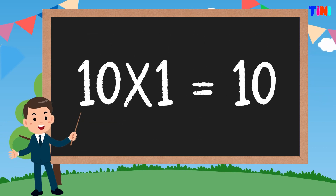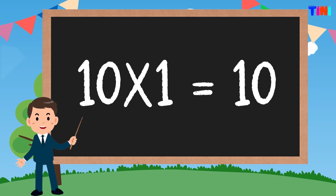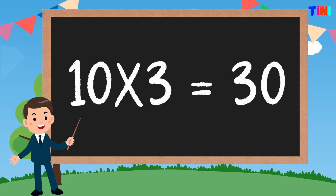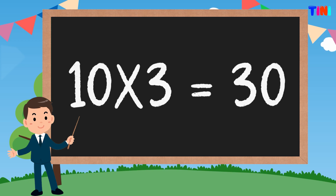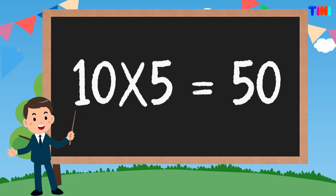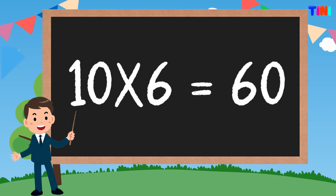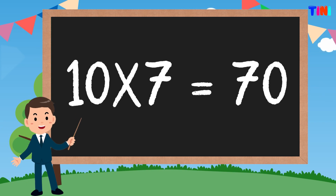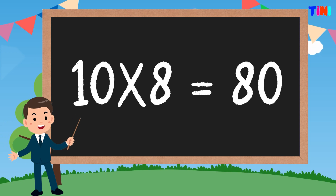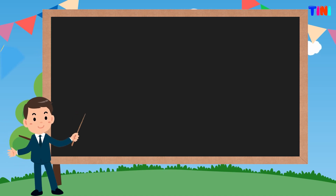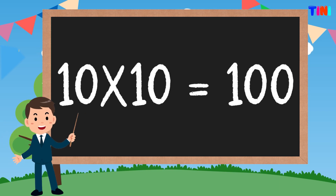Table of ten. 10 ones are 10. 10 twos are 20. 10 threes are 30. 10 fours are 40. 10 fives are 50. 10 sixes are 60. 10 sevens are 70. 10 eights are 80. 10 nines are 90. 10 tens are 100.